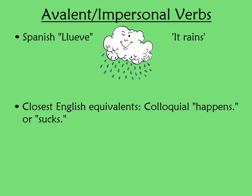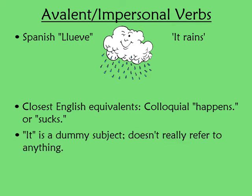More normally in English, we have 'it' as a dummy subject. If I say 'it rains,' 'it' doesn't actually apply to anything — it's just there to fill in the space. Some linguists call this avalent, because it doesn't really refer to any entity.